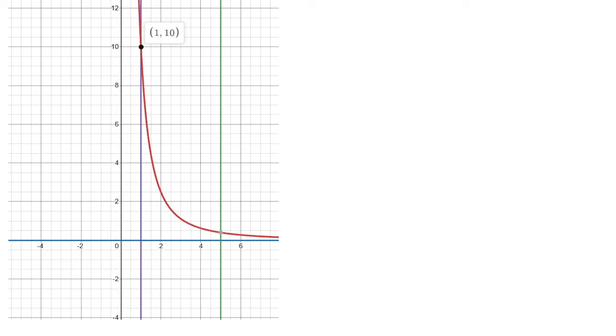We're given the graph of y equals 10 over x squared, and this is bounded by y equals 0, x equals 1, and x equals 5, and we want to revolve this around the y-axis.